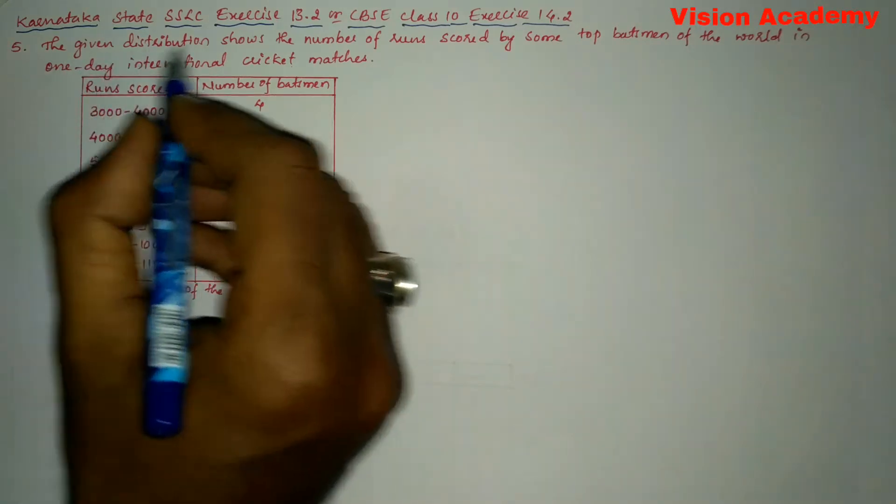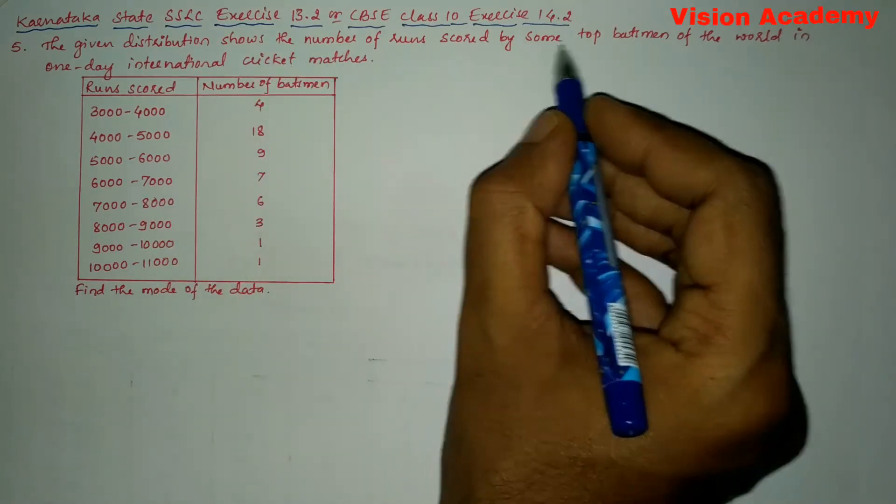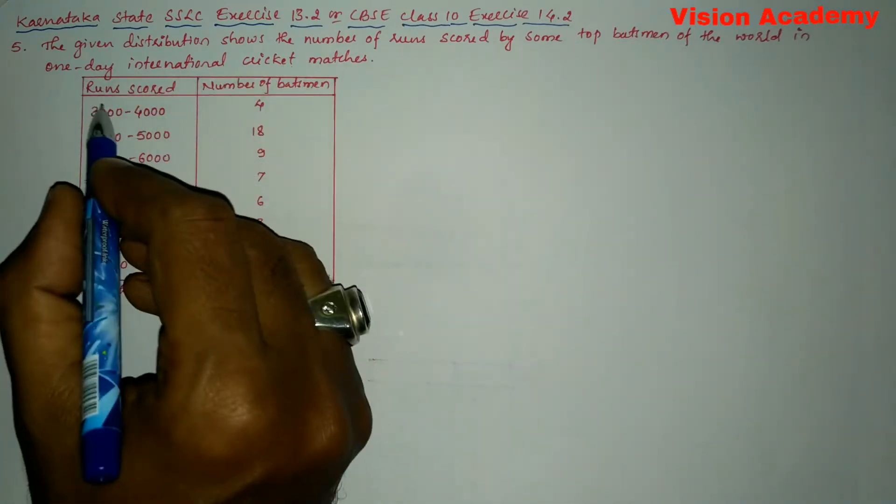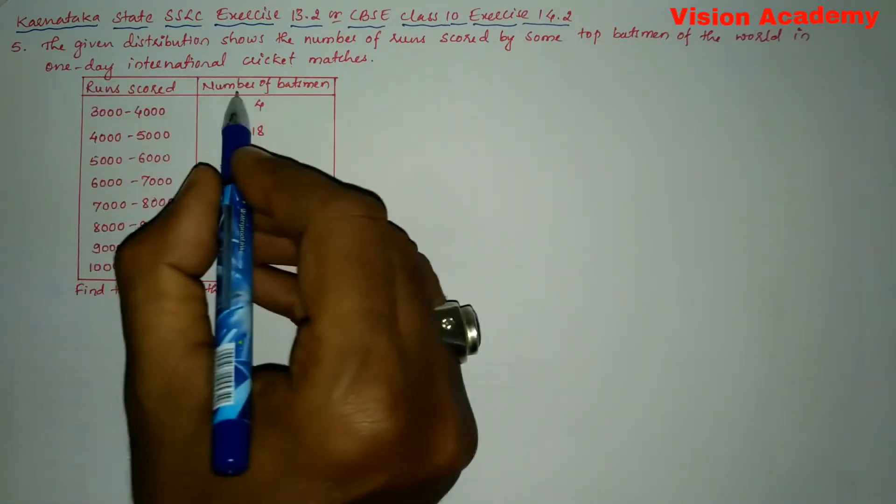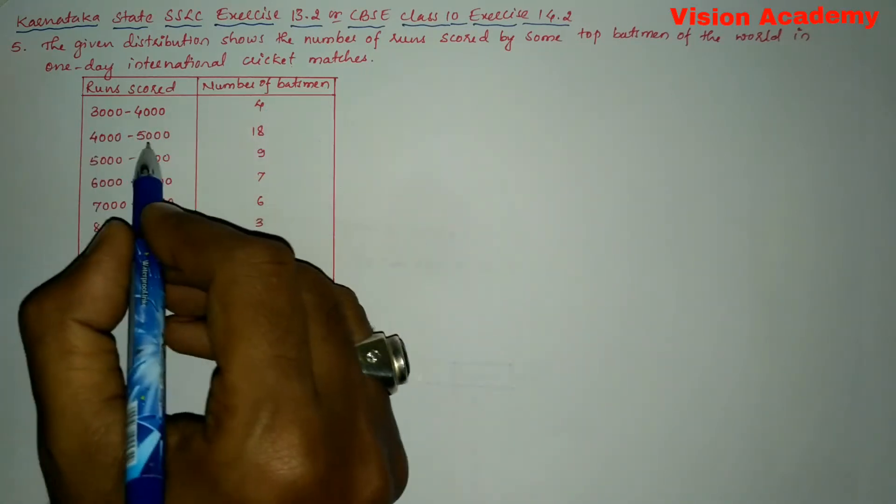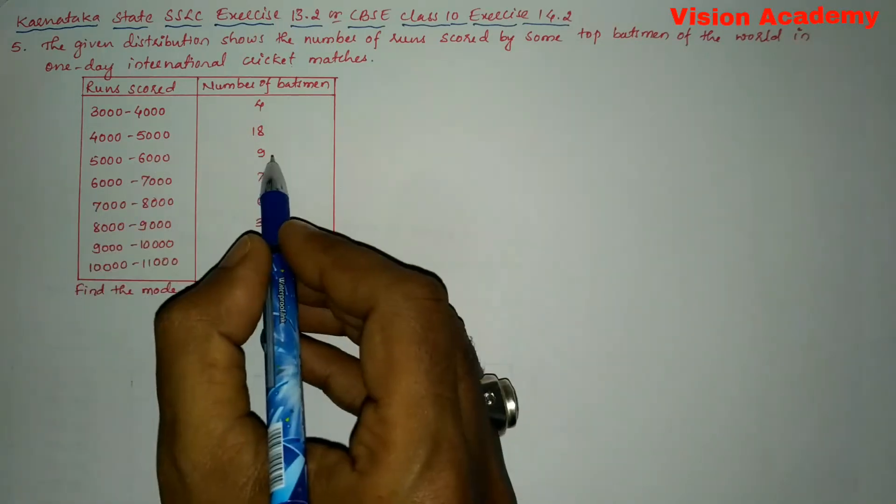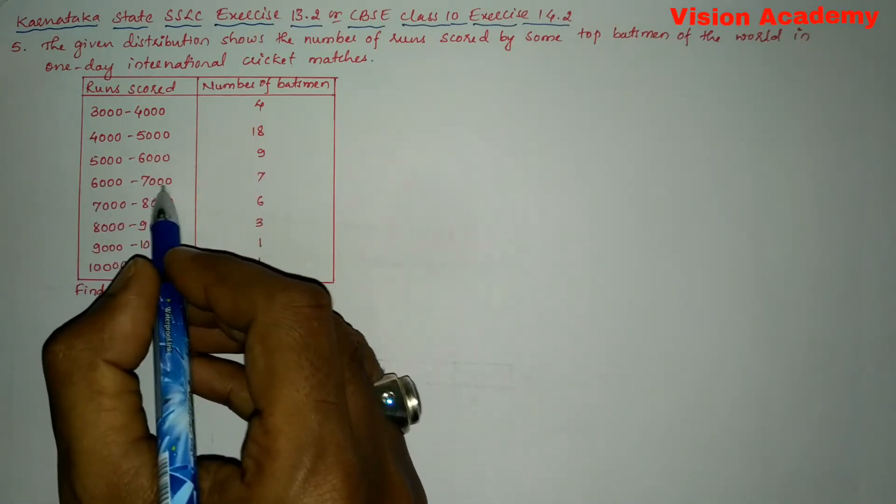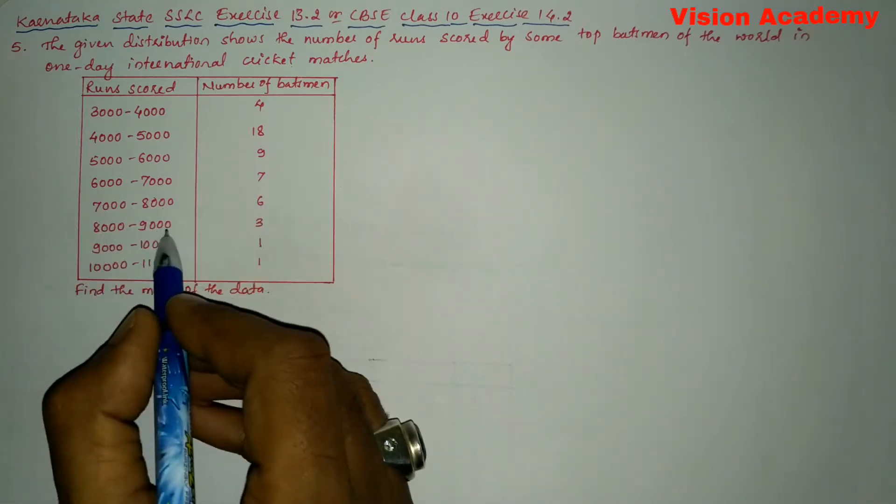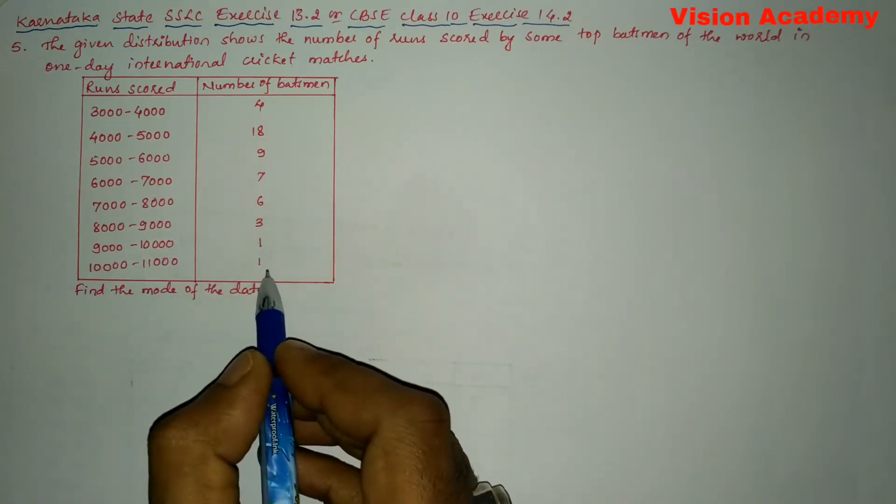Question number 5: The given distribution shows the number of runs scored by some top batsmen of the world in one day international cricket matches. Runs scored, number of batsmen: 3000 to 4000, 4; 4000 to 5000, 18; 5000 to 6000, 9; 6000 to 7000, 7; 7000 to 8000, 6; 8000 to 9000, 3; 9000 to 10000, 1; 10000 to 11000, 1.